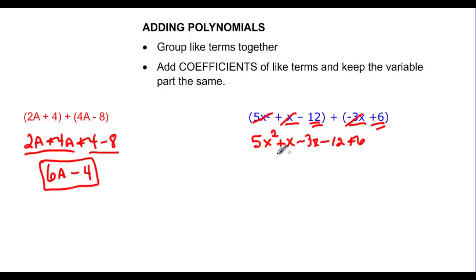So now I've got all my like terms together. I've got only 1 x squared, I've got 2 x terms, and I've got 2 constants. So 5x squared, when I combine my x terms, x minus 3x will be minus 2x, and negative 12 plus 6 will be minus 6. So when I add those polynomials, I have 5x squared minus 2x minus 6.